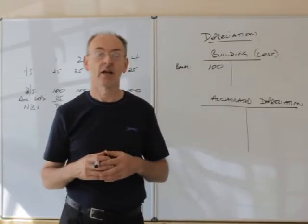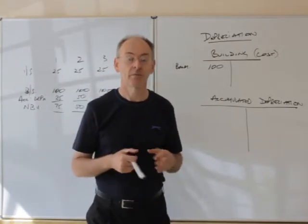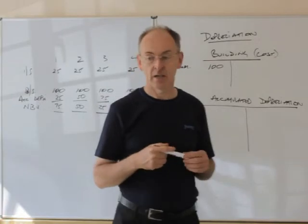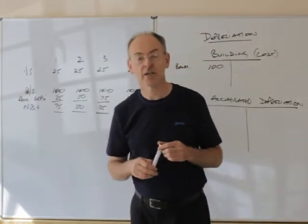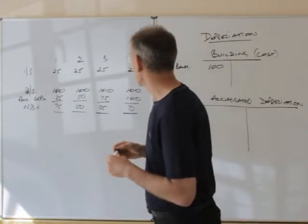On the board I put a little chart. I've suggested the cost of an asset is 100, and its useful economic life in the business is four years.